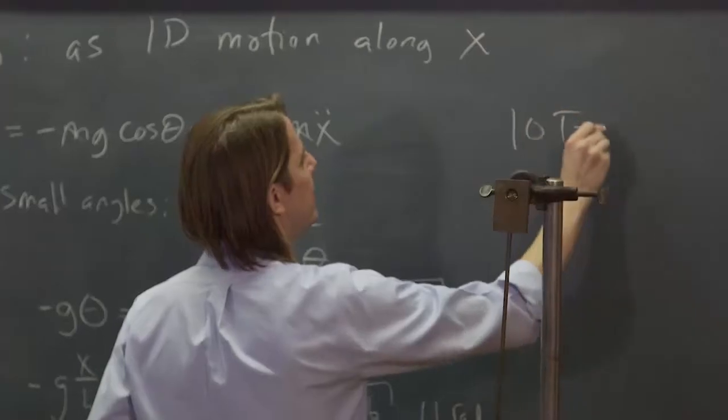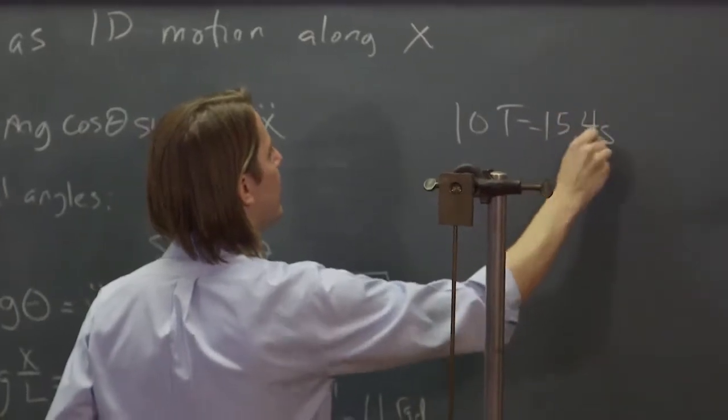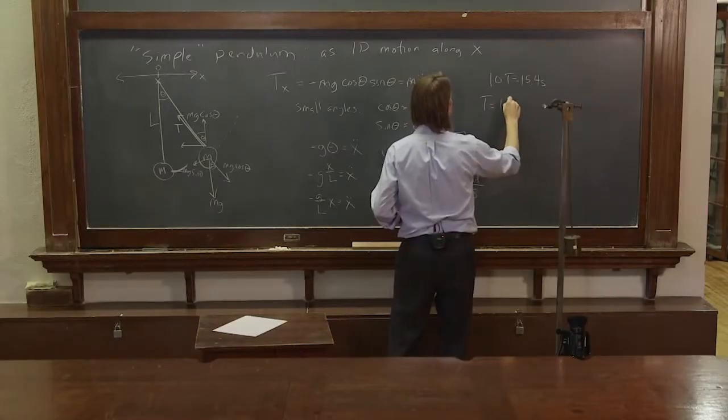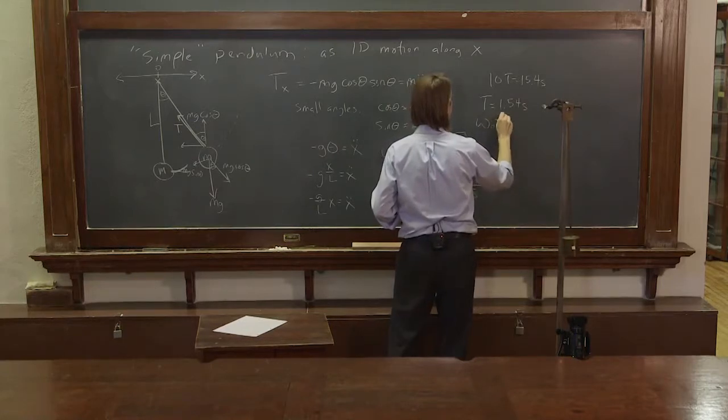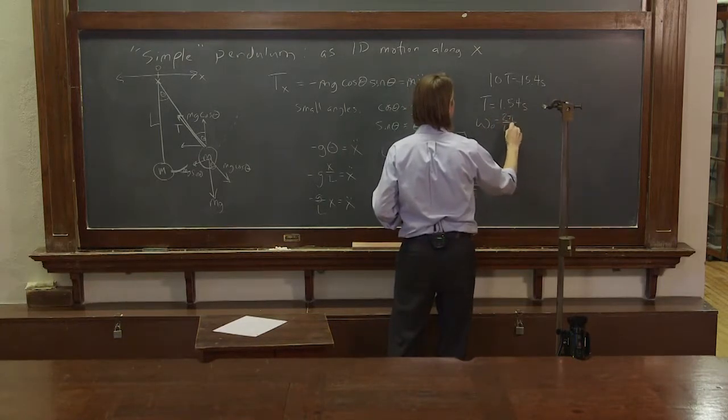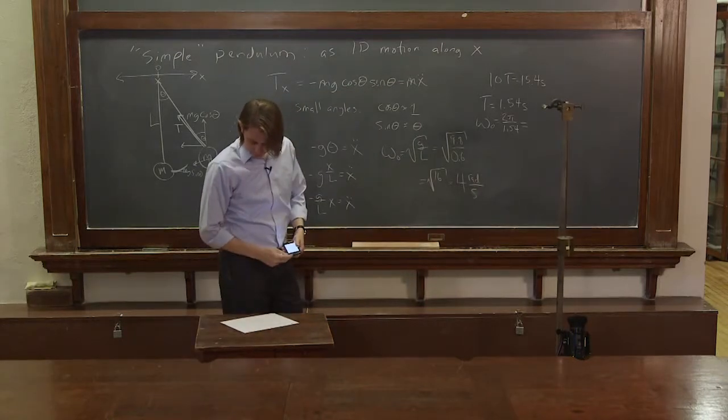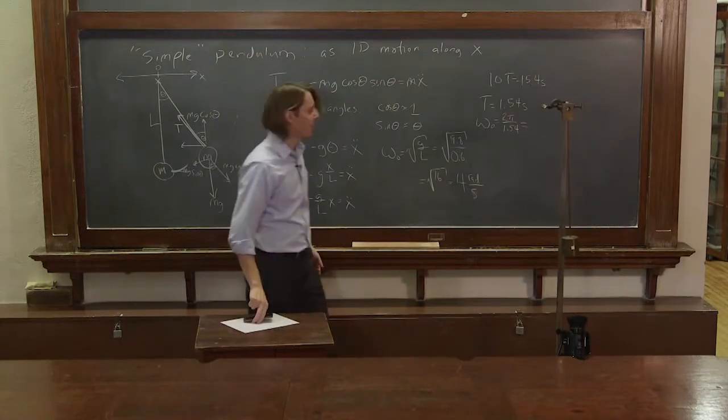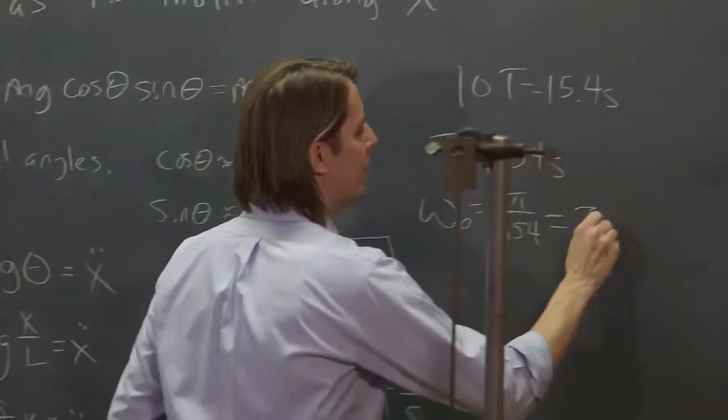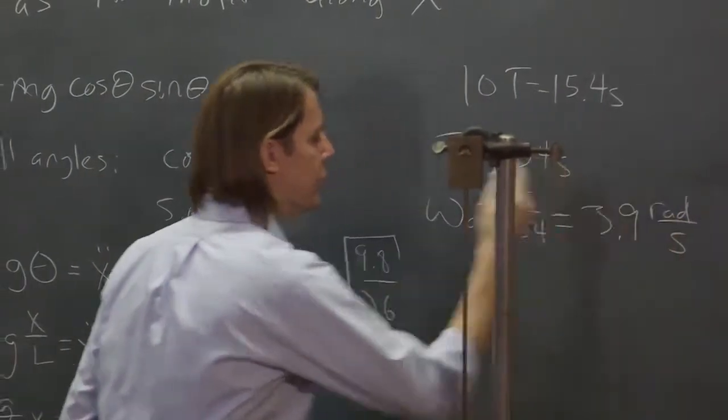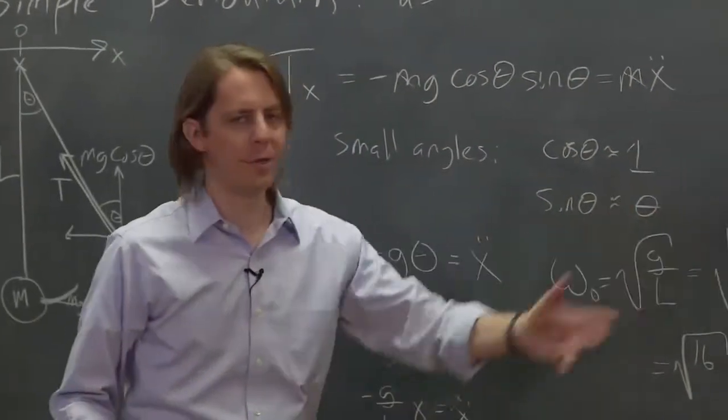So 10T is 15.4 seconds. So T equals 1.54 seconds. So omega naught is 2 pi over 1.54, which I think is about what I got before, up at 1.6 before. And that came out to about 3.9 radians per second. So sure enough, 3.9 and 4, close enough.